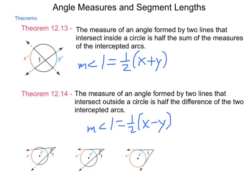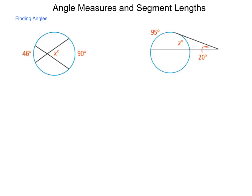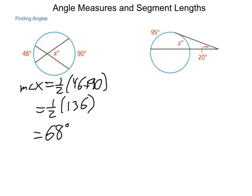So how can we use this to solve unknown values? So we're finding some angles. So in our first diagram here, the measure of angle x is equal to one-half of the two intercepted arcs. So it's half of 46 plus 90. So that means it's going to be one-half of 136. Half of 136 is 68. So the measure of angle x is 68 degrees.